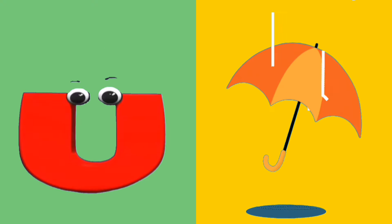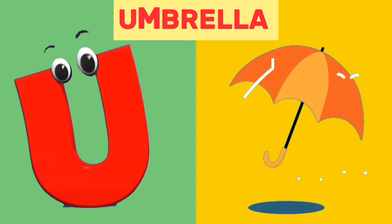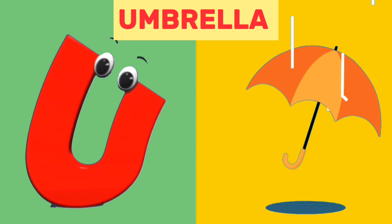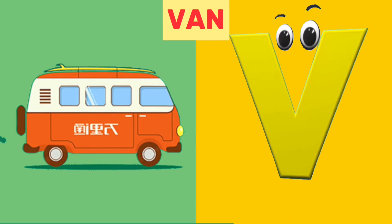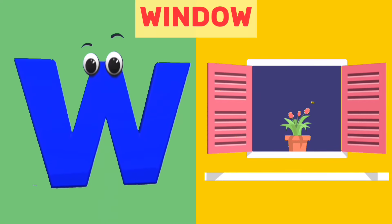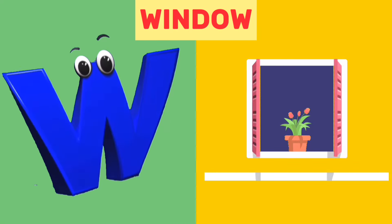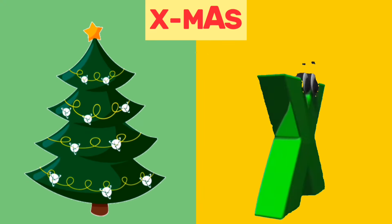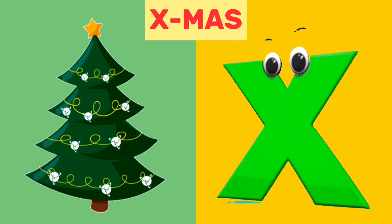U is for umbrella. U, umbrella. V is for van. V, van. W is for window. W, window. X is for Xmas. X, Xmas.